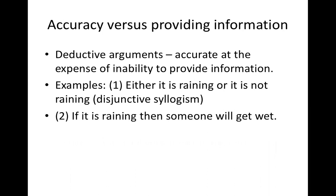We are done with inductive arguments. Now let's make some comparison between deductive and inductive arguments. Deductive arguments are accurate, but inductive arguments provide information. Deductive arguments are accurate at the expense of being able to provide information. For example: either it is raining or it is not raining — a disjunctive statement that is always accurate whether it is raining or not, but it does not give you information about whether it is raining. Similarly: if it is raining, then someone will get wet — always correct regardless of weather, but it doesn't tell you whether it is actually raining. So deductive arguments are accurate at the expense of providing information.